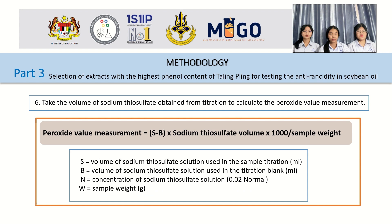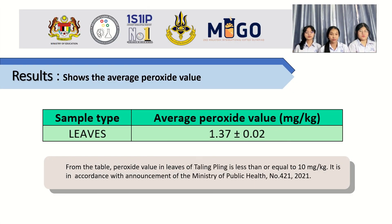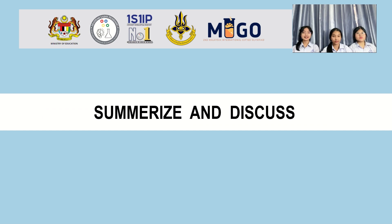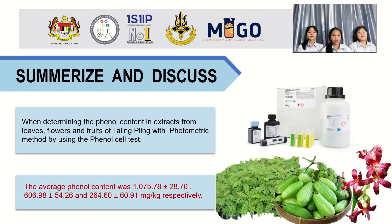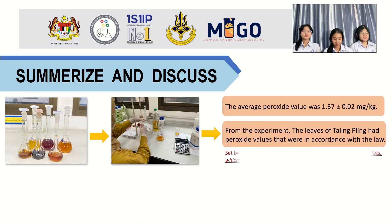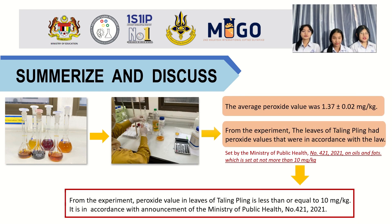Resolve through the average peroxide volume. From the table, the oil with the leaf of bilimbi extract has a peroxide value less than or equal to 10 meq/kg. It is in accordance with the announcement of the Ministry of Public Health number 421-2021. We will now summarize and discuss: when determining the phenol content extracted from leaves, flowers, and fruits of bilimbi with photometric method by using the phenol cell test, the average phenol content was 1075.78 ± 28.76, 606.98 ± 54.26, and 264.60 ± 60.91 mg/kg, respectively. The average peroxide volume was 1.37 ± 0.02 meq/kg. From the experiment, the leaves of bilimbi had a peroxide volume within the standard in accordance with the law.